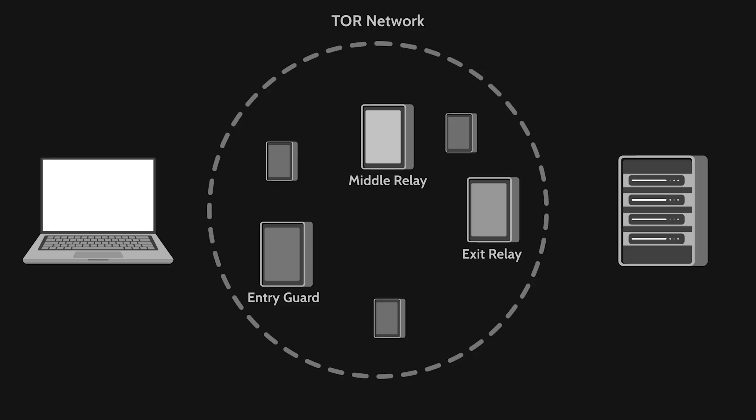Another significant risk is eavesdropping at the exit node. Because Tor traffic is not encrypted by default once it leaves the exit node, a bad actor intercepting the connection before it reaches the broader internet could potentially access sensitive user data. This data, if intercepted, could be traced back to the user, defeating the purpose of using Tor for privacy. In summary, Tor is a very cool network that can help provide privacy and anonymity and allow you to access the deep, dark recesses of the internet. But like anything in security, nothing is bulletproof, and you need to carefully evaluate your solutions and plan for compromise.